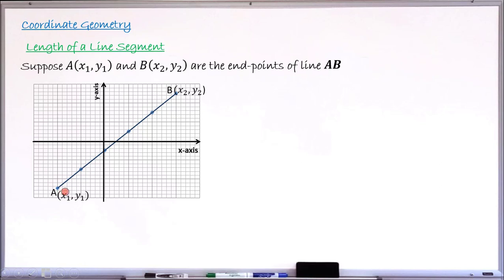To find the length of this line segment, we complete a right-angle triangle. I draw a line from point A horizontally to the right, and another line from point B vertically down. Where the two lines meet forms a 90-degree angle. I will now employ the Pythagorean theorem to find the length of the longest side, which is the hypotenuse.